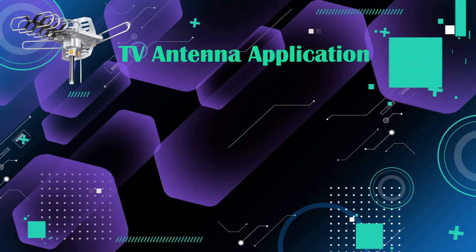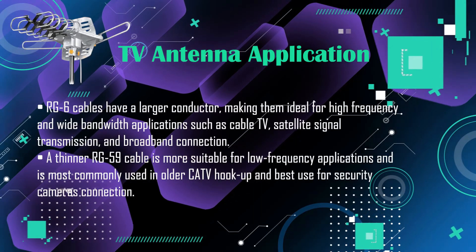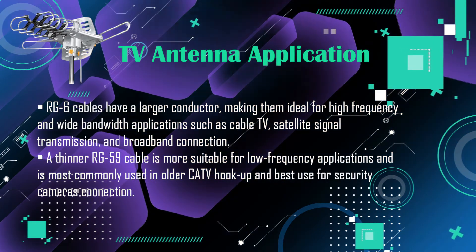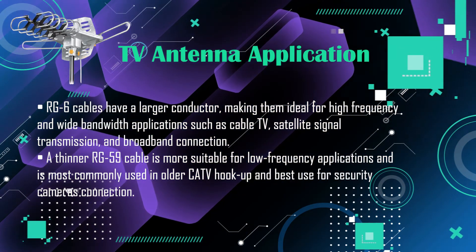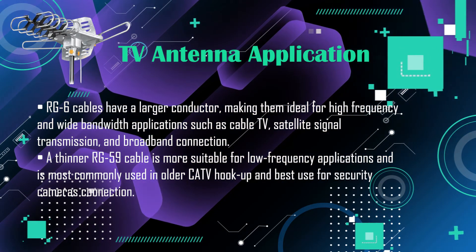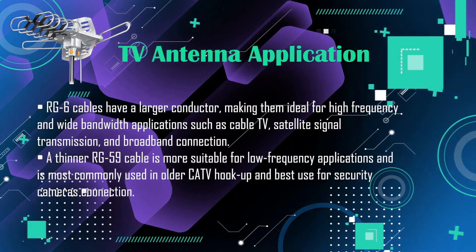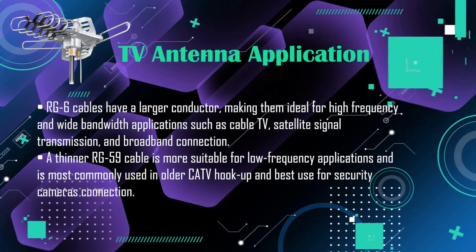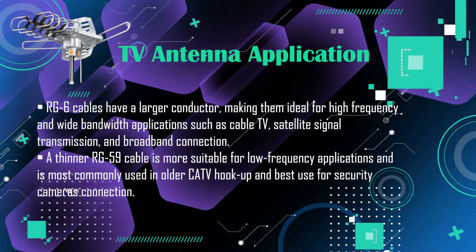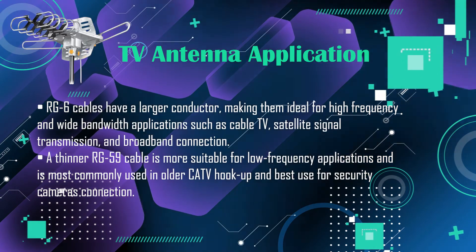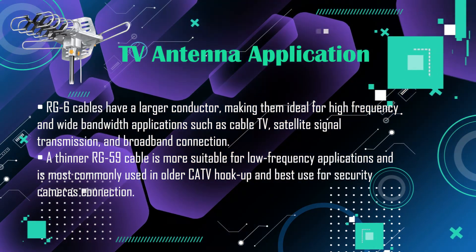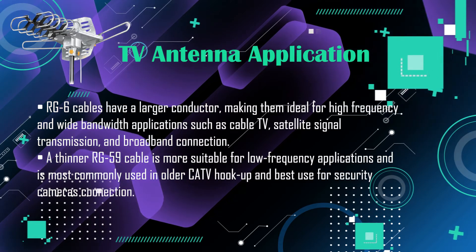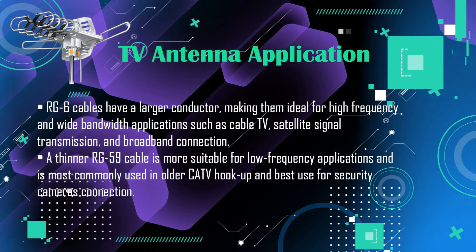TV antenna application: RG6 cables have a larger conductor, making them ideal for high frequency and wide bandwidth applications such as cable TV, satellite signal transmission, and broadband connection. A thinner RG59 cable is more suitable for low frequency applications and is most commonly used in older CATV hookup and best used for security camera connections.